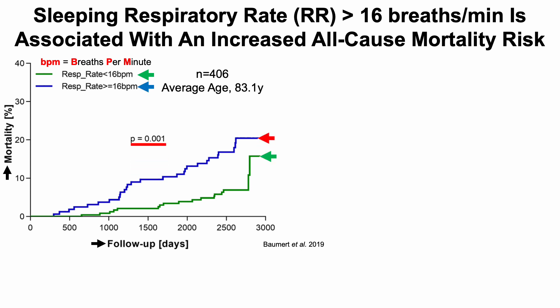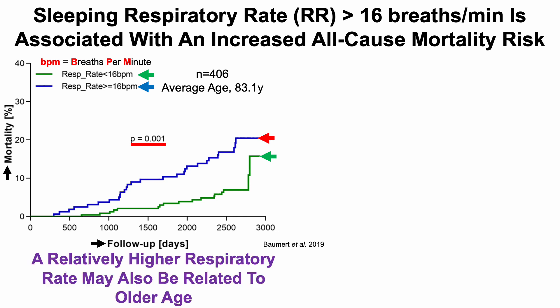In contrast, an increased all-cause mortality risk was present for the group that had a respiratory rate greater than 16 breaths per minute. One factor that may be related to these associations is older age, because the group with a respiratory rate greater than 16 breaths per minute was significantly older — 83.4 years for the blue line group — compared with 82.9 years for the lower-mortality group.